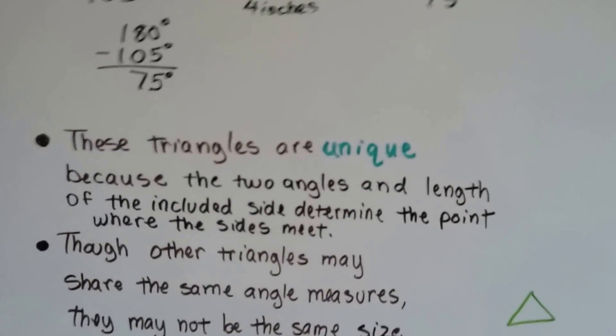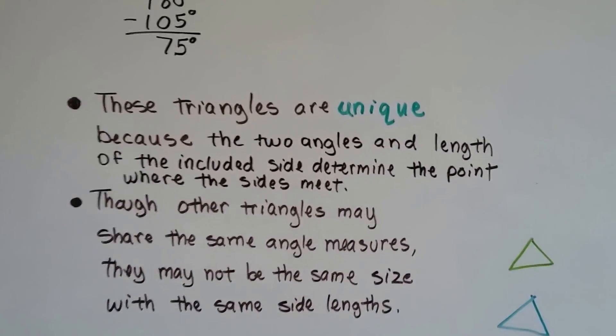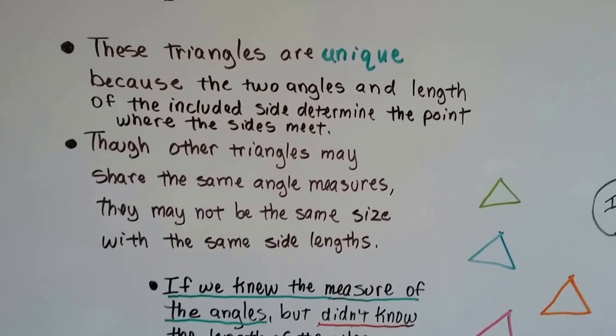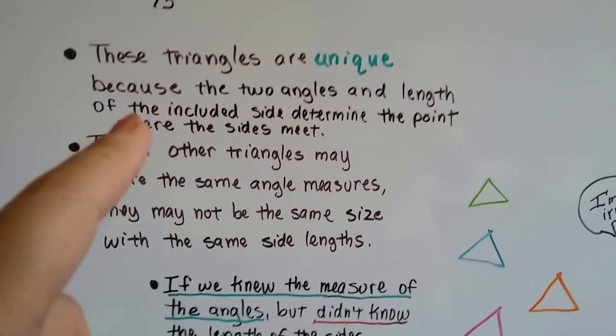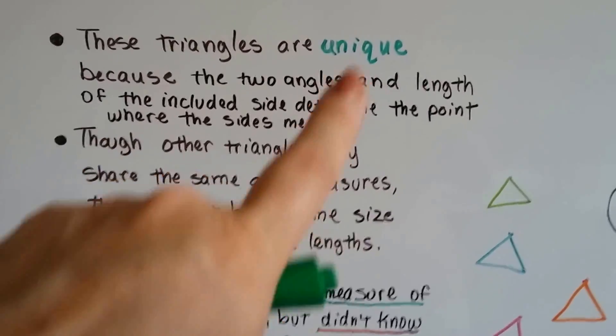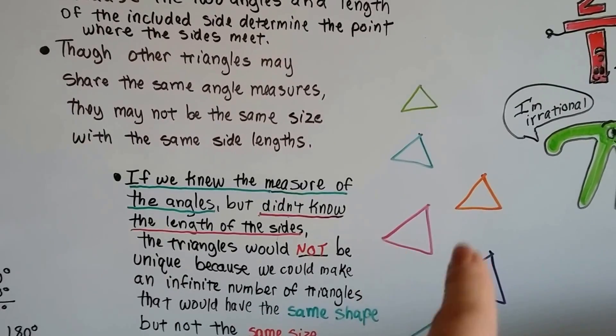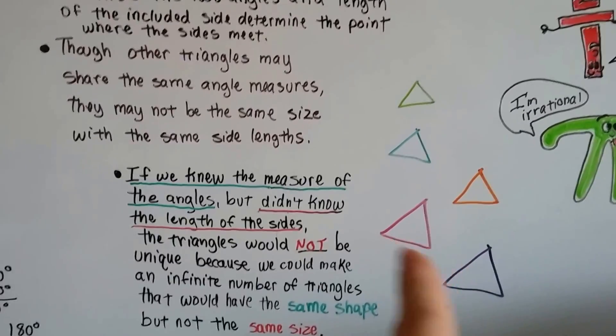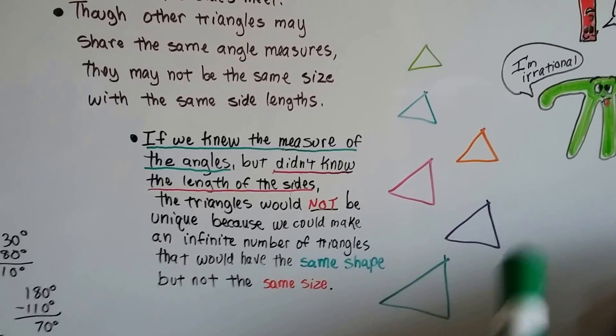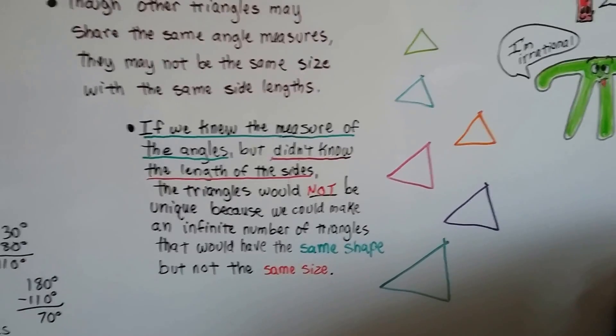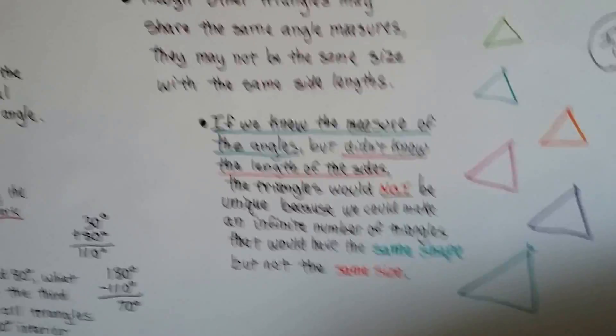So these triangles are unique because the two angles and the length of the included side determine the point where the sides meet. And though other triangles may share the same angle measures, they may not be the same size with the same side length. So the fact that it gave us two angles and a length, those three pieces of information, made it unique. If we knew the measure of the angles but didn't know the length of the side, the triangles would not be unique because we could make an infinite number of triangles that would have the same shape but not the same size.